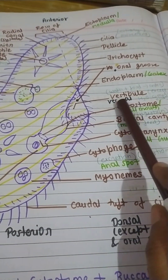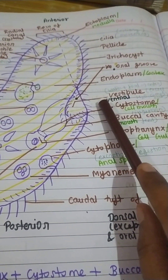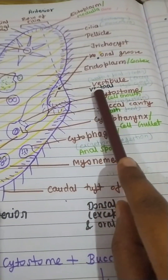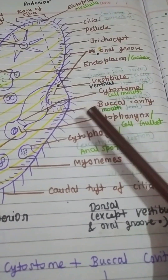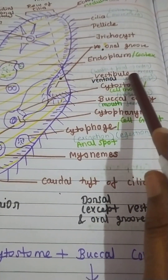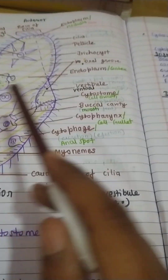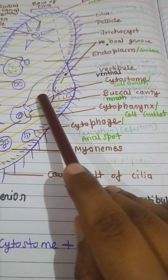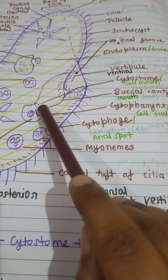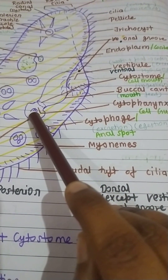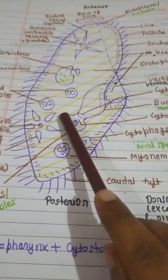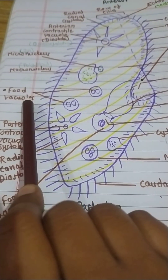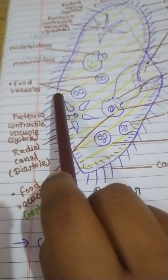If they have taken in excess water, it can diffuse out from the body surface. The food and water particles enter from the vestibule into the buccal cavity, then from the buccal cavity into the cytostome, and from the cytostome into the cytopharynx.